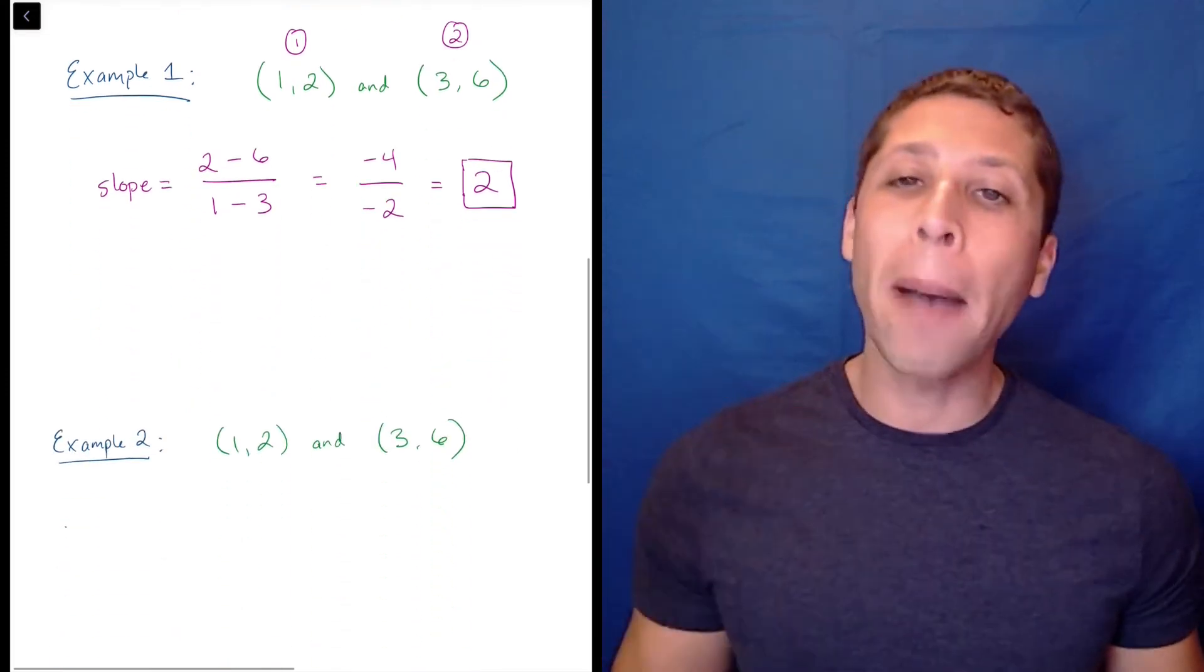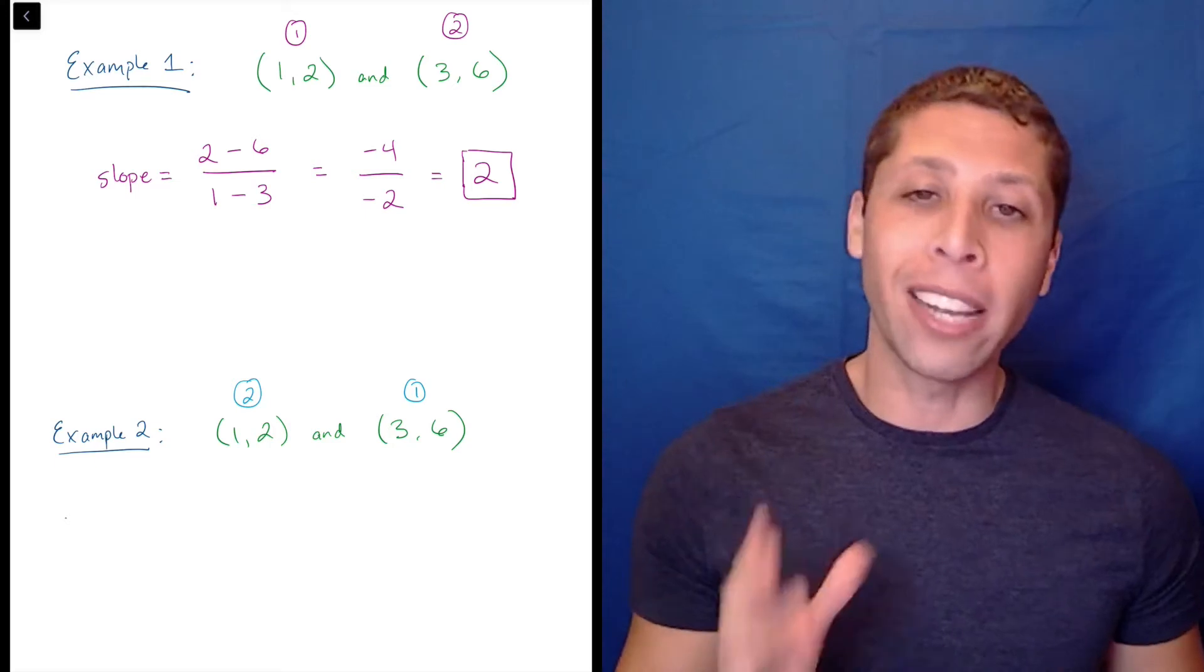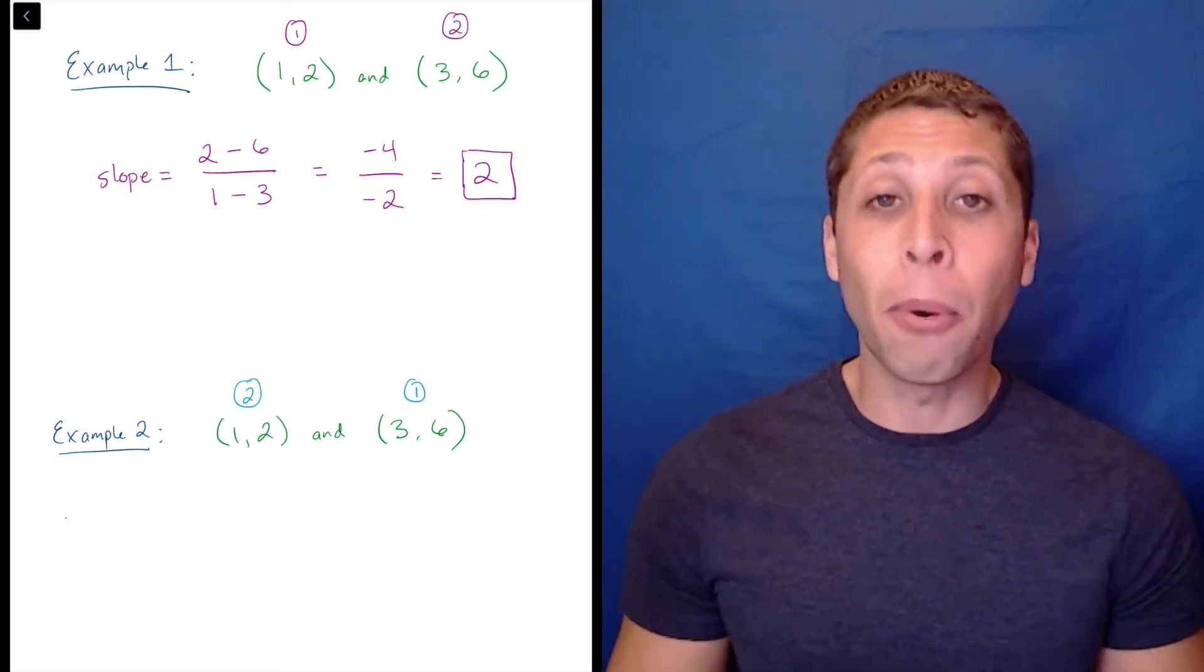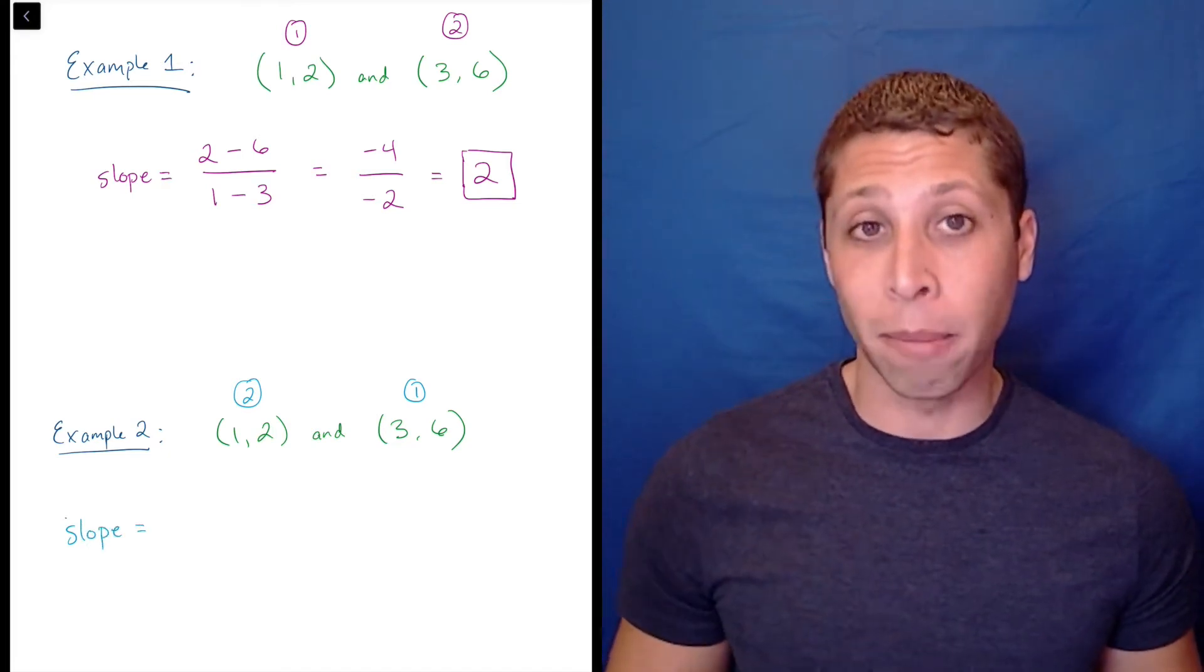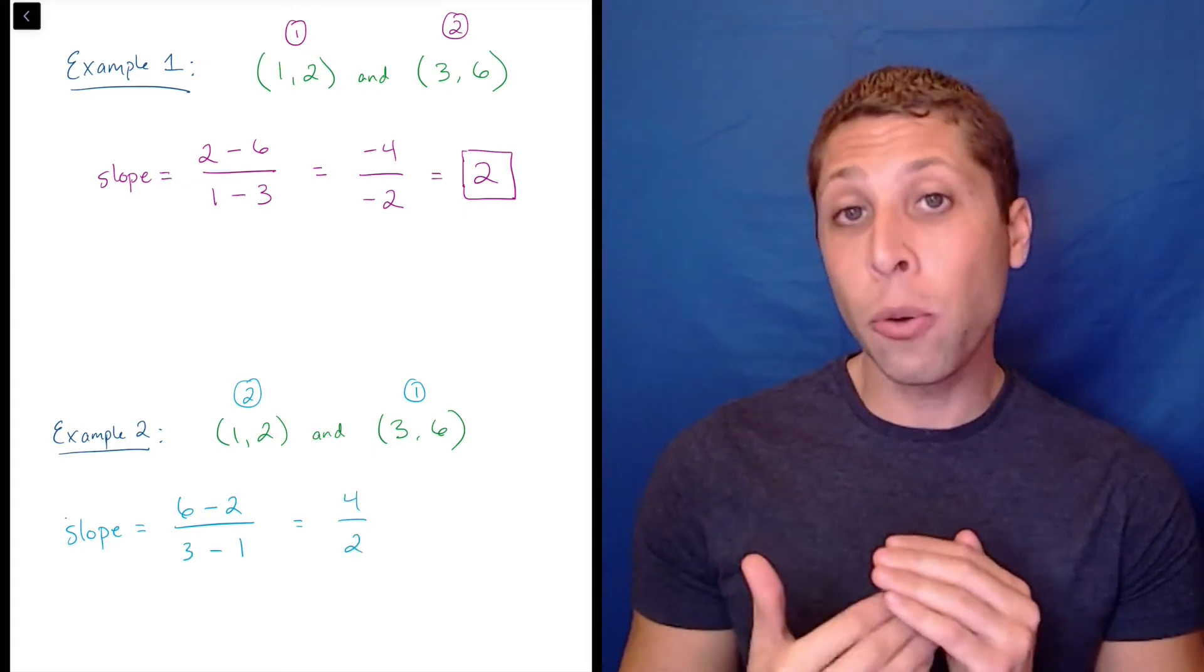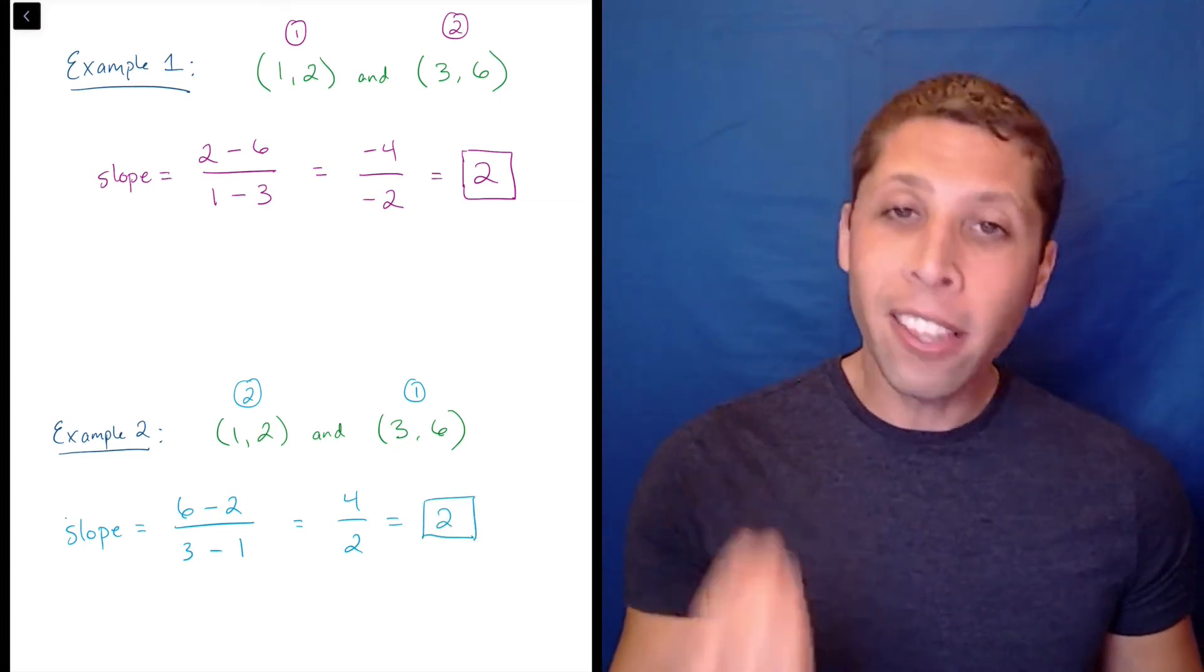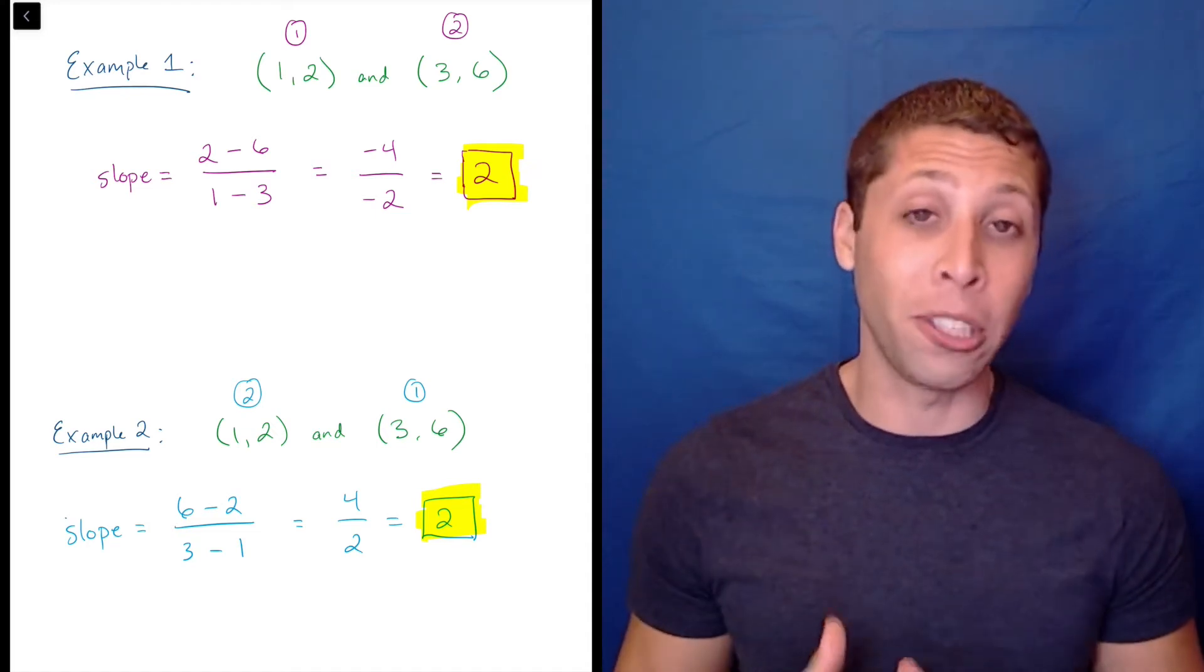But what would happen if we put the second point first and the first point second? Like I said before, as long as we're consistent, it shouldn't matter. This time, the 3, 6 point would be the first on the top and the first on the bottom, so we would get 6 minus 2 over 3 minus 1. This simplifies to 4 divided by 2, which is still the same slope of 2 that we got before. This goes to show that you really don't need to worry about which point you choose first.